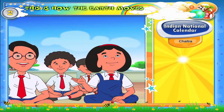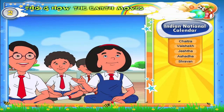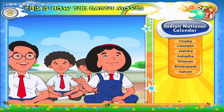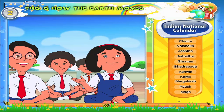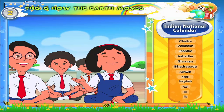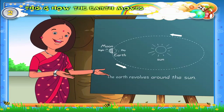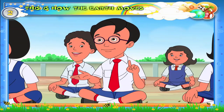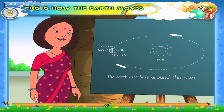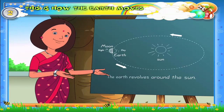Rhea, can you name all the months of the Indian national calendar? Chaitra, Vaishakh, Jyeshtha, Ashadha, Shravan, Bhadrapad, Ashwin, Kartik, Margashirsha, Paush, Magh and Falgun. It's nice that you still remember the months of the Indian solar year. Teacher, can we play another game? Sure, when we do the next lesson.